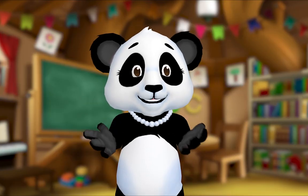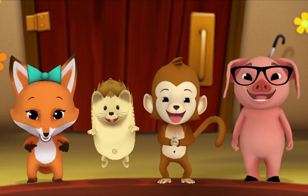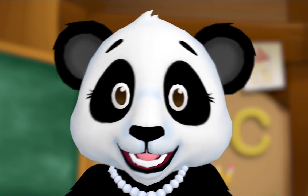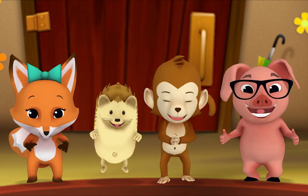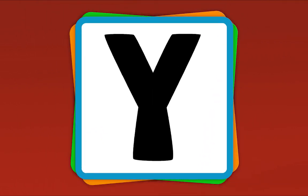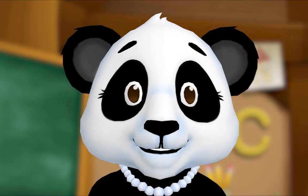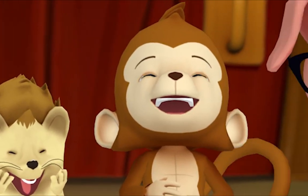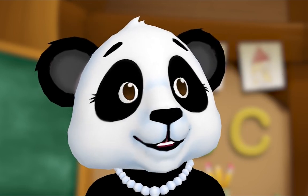Hey everybody, let's practice our letters by playing the alphabet game! Yay! Let's all play the alphabet game. When I show you a letter, say its name. Are you ready? Yeah! What's this letter? K! What's this letter? V! What's this letter? W! What's this letter? Y! Now let's do it fast: W, Y, K, D, K, W, V, Y, W, Y, K, Z, W, K, Y, Z. Nice work everybody! That's how you play the alphabet game — when you see a letter, you say its name.